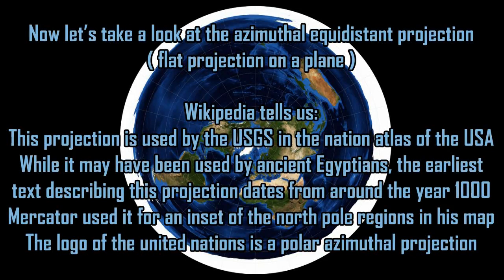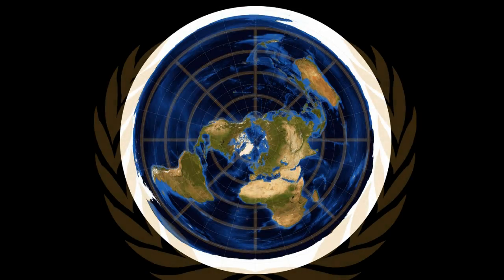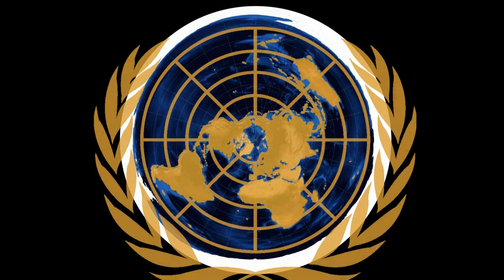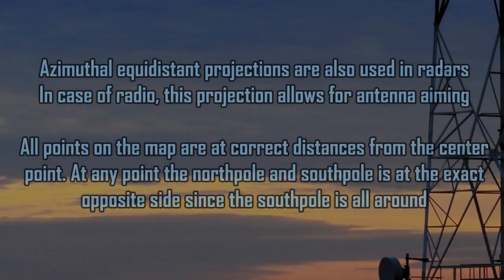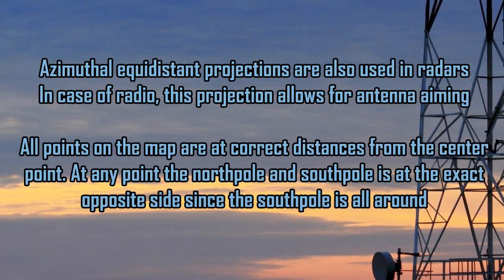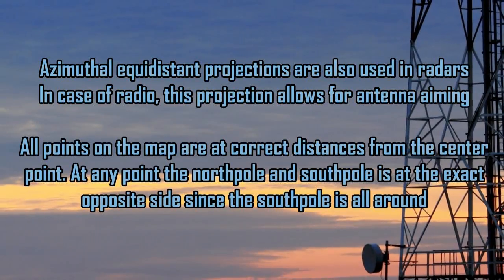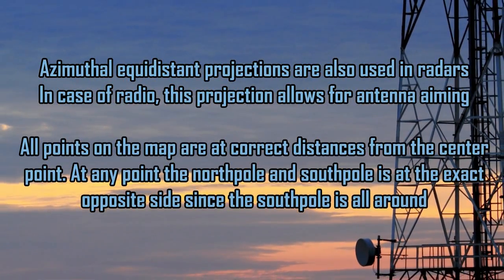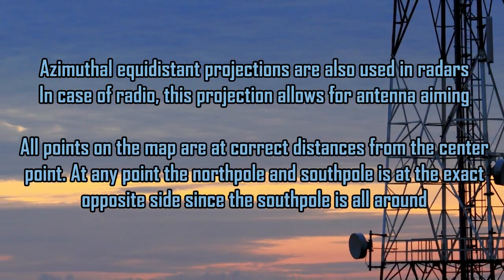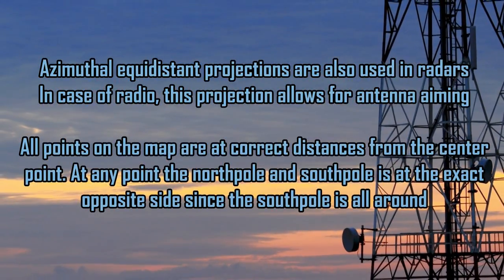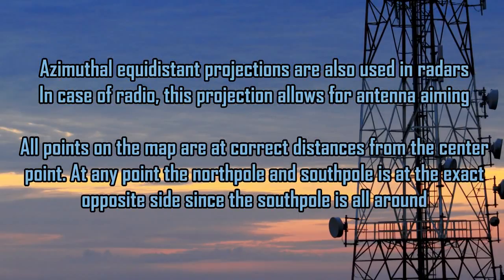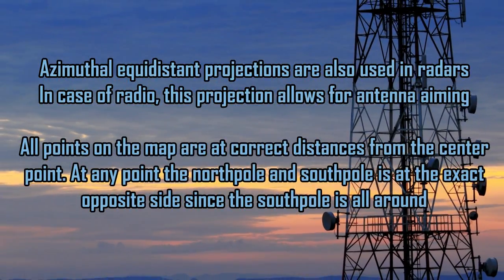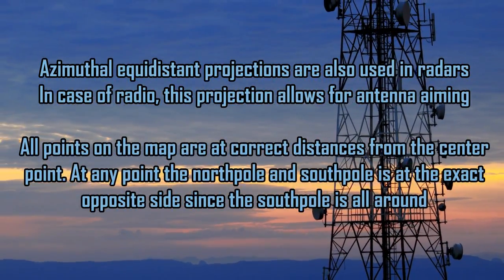Mercator used it for an inset of the North Pole regions in his map. The logo of the United Nations is a polar azimuthal projection. Azimuthal equidistant projections are also used in radars — in the case of radio, this projection allows for antenna aiming. All points on the map are at correct distances from the center point.